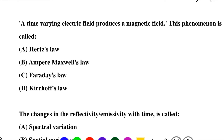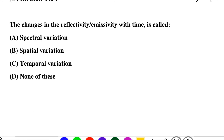Next question: a time varying electric field produces a magnetic field — that phenomenon is called option A: Hertz law, option B: Ampere-Maxwell's law, option C: Faraday's law, option D: Kirchhoff's law. The correct answer is option B: Ampere-Maxwell's law.